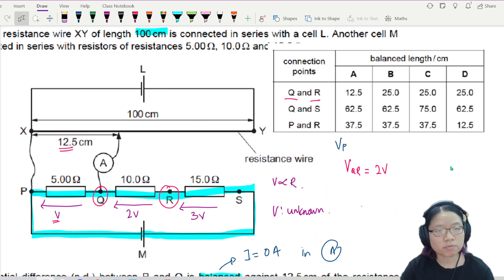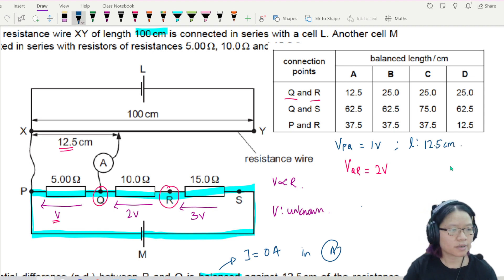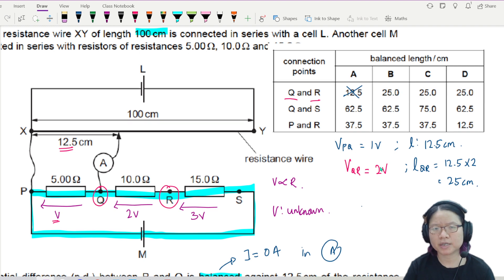So when it's 2V, what should be the length for Q, R? 12.5 times 2, that would be 25 cm. Yeah. So A is out. You may be thinking, can use ratio like that. Can ah.